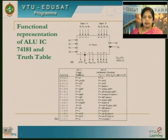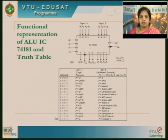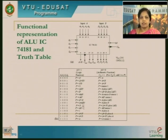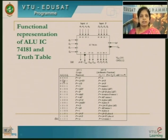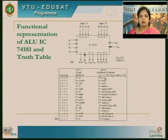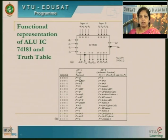If mode M is set to 1, we perform logical operations. Here are the sets of logical functions that can be performed based on the input selection lines. When mode M equals 0, we perform arithmetic functions. For arithmetic functions, CN should be made 1; otherwise CN should be 0. Let us take an example: to perform a NOT complement operation, we need to give selection inputs as 0 0 0.